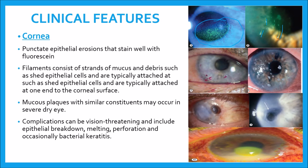The filaments stain well with rose bengal but less so with fluorescein, as you can see they are staining very well with rose bengal. Mucous plaques with similar constituents may occur in severe dry eye. They consist of semi-transparent white to gray, often slightly elevated lesions of varying size, as seen in the picture. These plaques are present in extreme dry eyes.